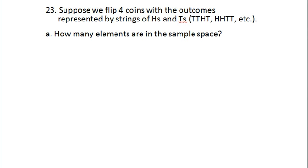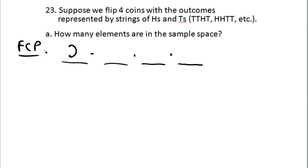Suppose we flip four coins with the outcomes represented by strings of H's and T's — H's for heads, T's for tails. How many elements are in the sample space? The simplest way to solve this is with the fundamental counting principle. If you're flipping four coins, there are two possibilities for each toss. So by the fundamental counting principle there are 2 × 2 × 2 × 2 different outcomes, which means there are 16 elements in the sample space.